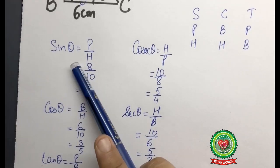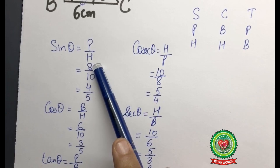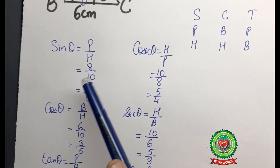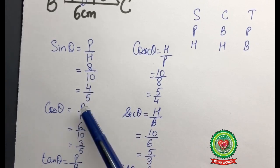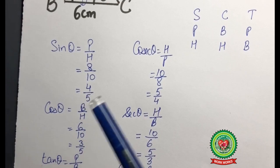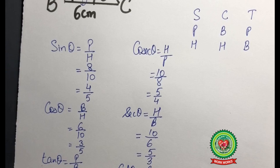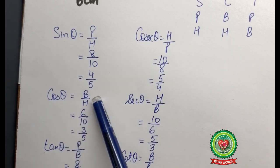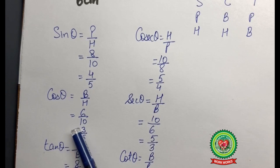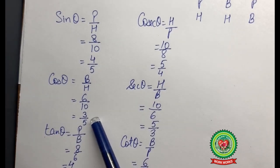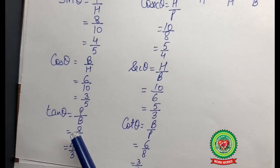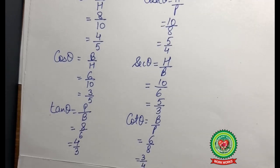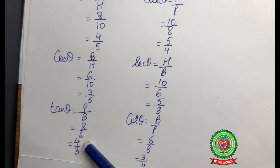Now we write down the six trigonometrical ratios using the given information. Sine theta equals P upon H — substituting values gives 8 upon 10, and simplifying gives 4 upon 5. Remember that ratios are always in their simplest form, so we must simplify wherever possible. Cosine theta equals B upon H — substituting and simplifying gives 3 upon 5. Tan theta equals P upon B — substituting and simplifying gives 4 upon 3.